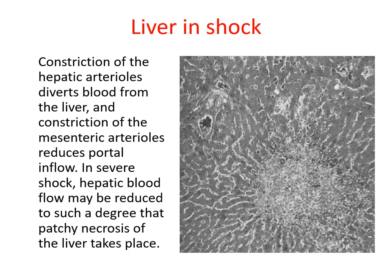Looking at the liver: constriction of mesenteric arterioles reduces portal flow. In severe shock, hepatic blood flow may be reduced to such a degree that patchy necrosis takes place. The liver is a major metabolic organ in the body and its failure alters the entire metabolism, adding to further problems. The liver also generates toxins because of its hypoxemic status and damage, resulting in severe hepatotoxicity and hepatic toxemia.